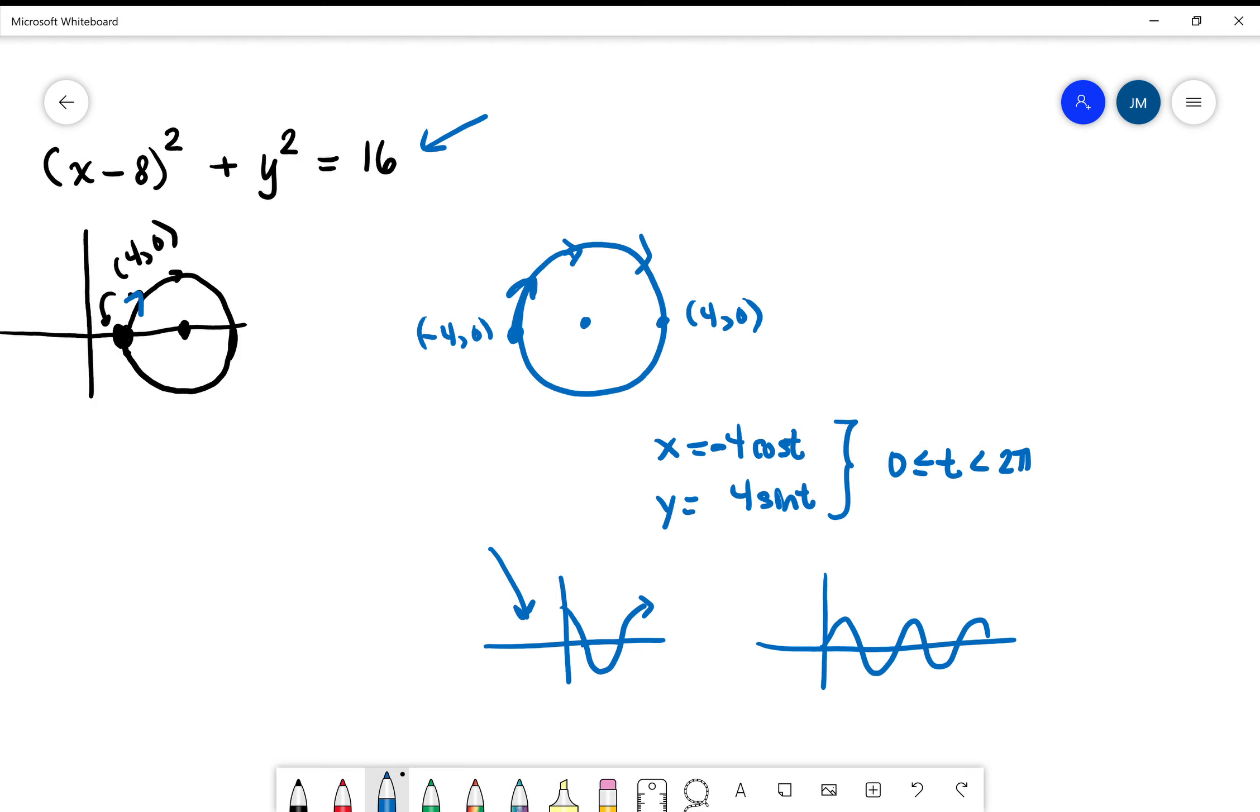Now, the y-coordinate, though, is starting at 0, going up, and then going down, and then going up again. That is totally in line with what the sine function is. So we have our parametric equations for the circle centered at the origin right here, x equals negative 4 cosine t, y equals 4 sine t.